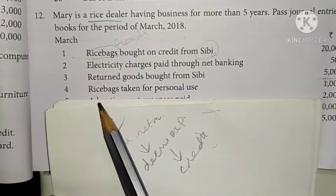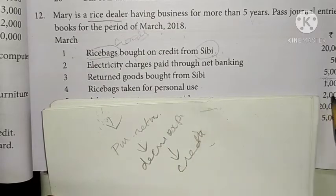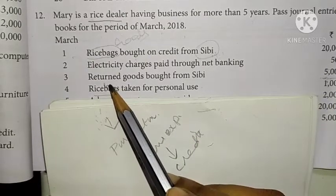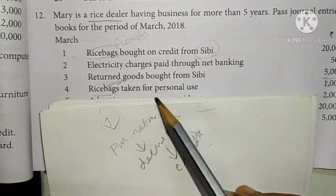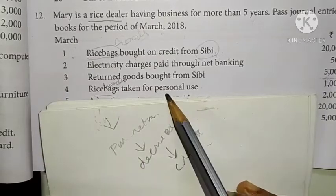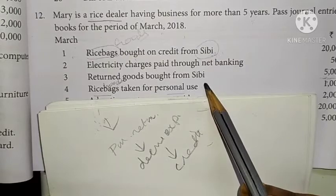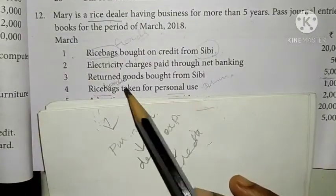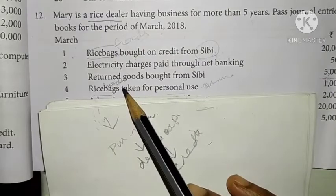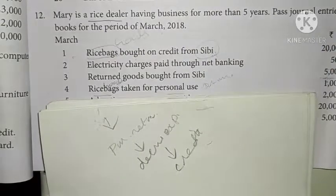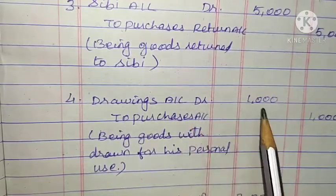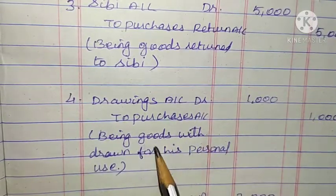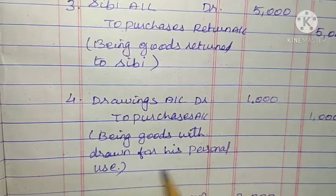Date 4: Rice bags taken for personal use, 1,000. Rice bags is goods taken for personal use. Personal use means drawings. Drawings account debited 1,000; To Purchases account 1,000. Being goods withdrawn for personal use.